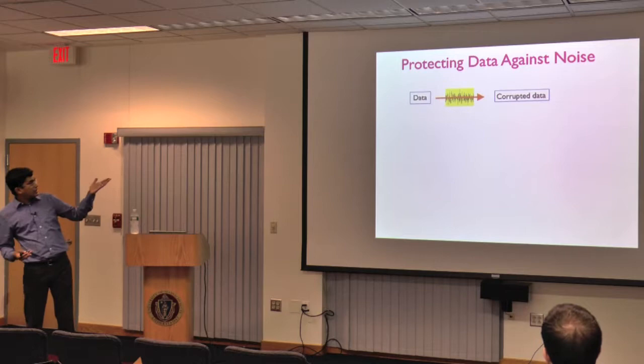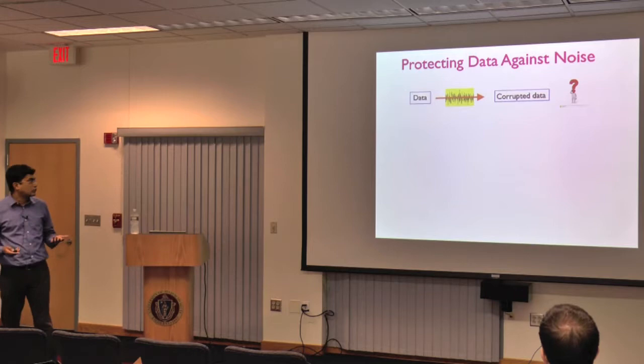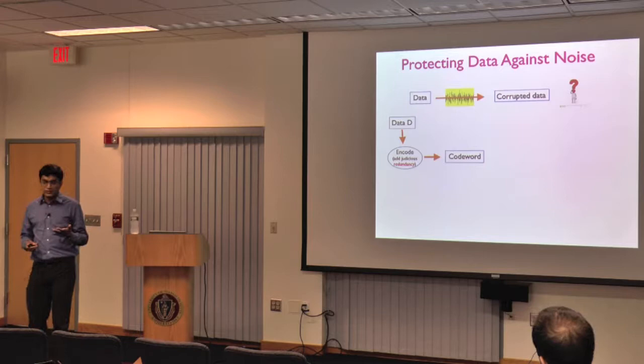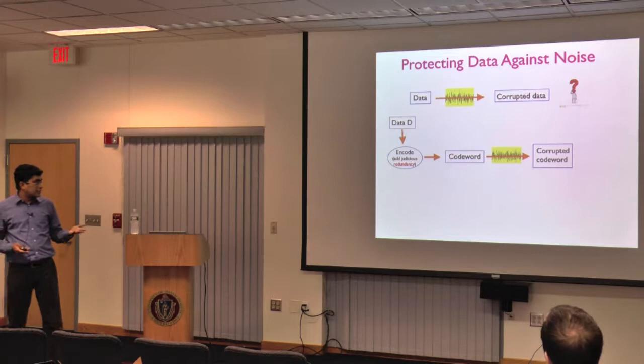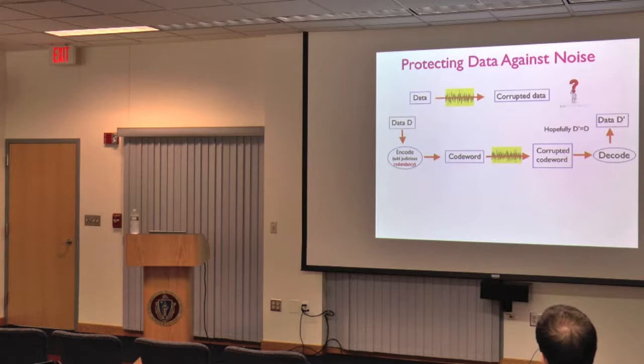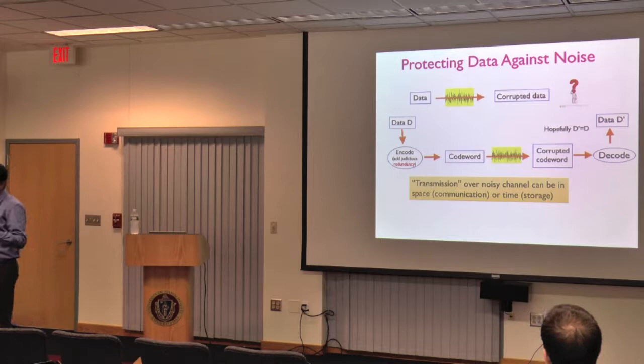Error correction is about protecting data against noise. You have data, you send it, and it gets corrupted. The idea is simple: you take your data, encode it by adding judicious redundancy, and send that thing called the codeword. The codeword also gets corrupted, but because of the redundancy built into the data, the receiver is able to figure out what the original data was despite the errors. This transmission can really be in space or time.